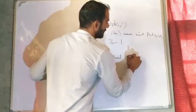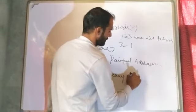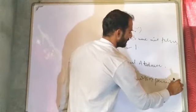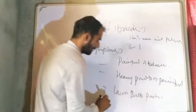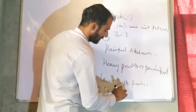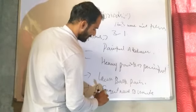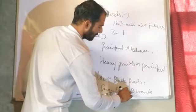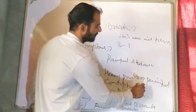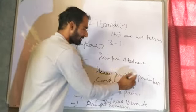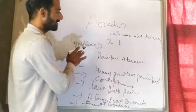These symptoms include: painful abdomen, or simply pain in the abdomen; heavy periods or painful periods; lower back pain; frequent need to urinate; painful intercourse; and constipation. These are some of the symptoms associated with fibroids.